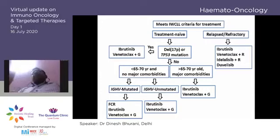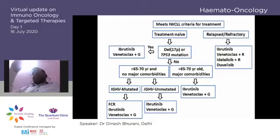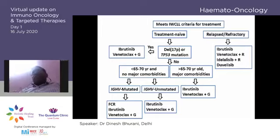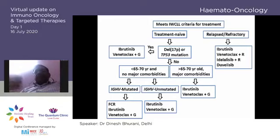Looking at guidelines, there is only a very small section where FCR is an option — for younger IGHV-mutated patients. Ibrutinib is fine; venetoclax plus obinutuzumab is also fine. Apart from that, essentially all options are targeted therapies. The western world has moved to targeted therapy for almost everyone. Whether this fits for our patients, I will come to that.